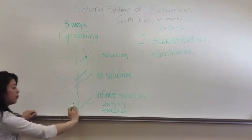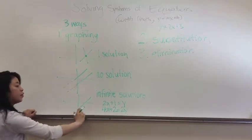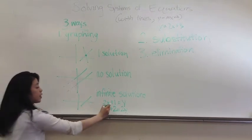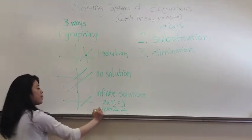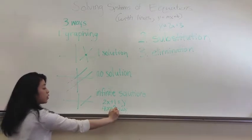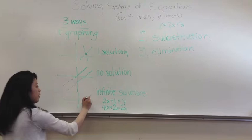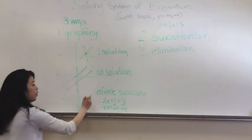Now, the third way is if the two lines end up to be equal to each other. For example, 2x plus 1 equals y is the exact same as 4x plus 2 equals 2y. They are the same line, which means there's an infinite number of solutions, because every single point is a solution.